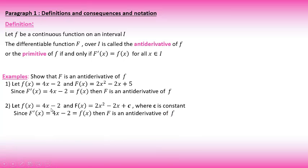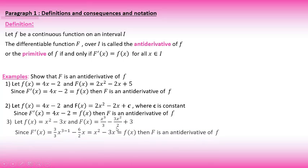Example number two shows a difference from example one — here we have a constant c. If we take the derivative for this function with respect to x, we get the same result. Whatever c is a constant — for example, c = 0 or c = √2 — its derivative is 0. As a result, capital F′ equals small f(x). Conclusion: capital F is called the antiderivative.